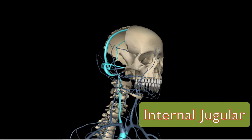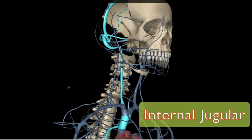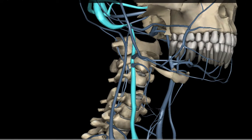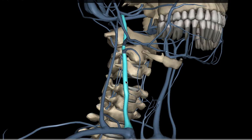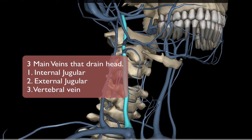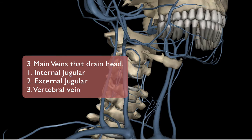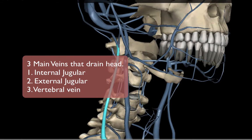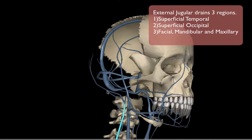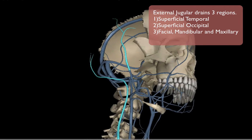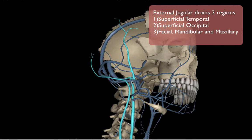Zooming back in, let's pay attention to the main vessels coming from the head. The one we just discussed is the internal jugular. The second is the external jugular, which drains the occipital portion of the brain and also the superficial aspect of the temporal region of the cranial cavity. These veins meet up at the external jugular.